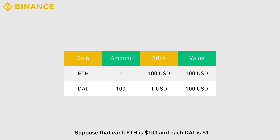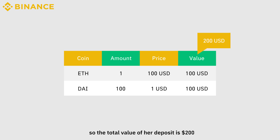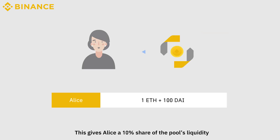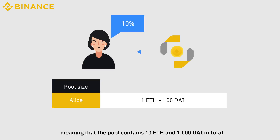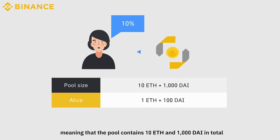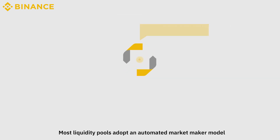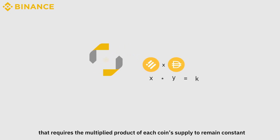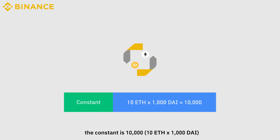Suppose that each ETH is $100 and each DAI is $1. Alice deposits 1 ETH and 100 DAI into a liquidity pool, so the total value of her deposit is $200. This gives Alice a 10% share of the pool's liquidity, meaning the pool contains 10 ETH and 1,000 DAI in total. Most liquidity pools adopt an automated market maker model that requires the multiplied product of each coin supply to remain constant. In this example, the constant is 10,000 — 10 ETH times 1,000 DAI.